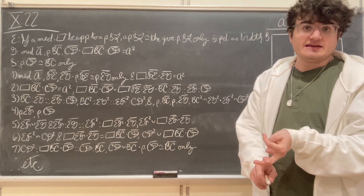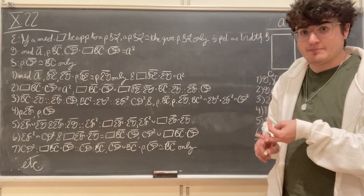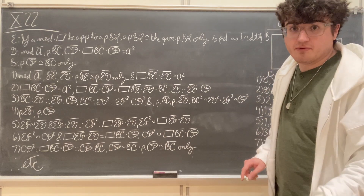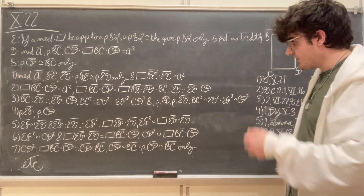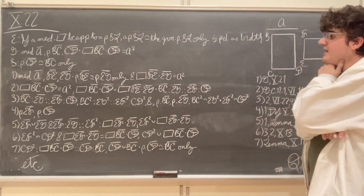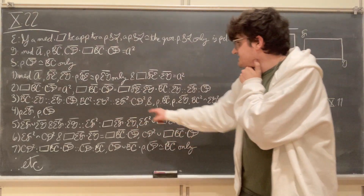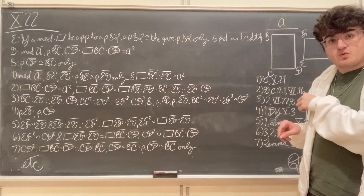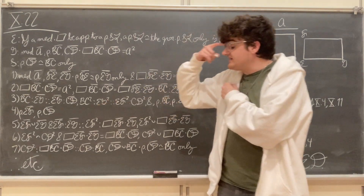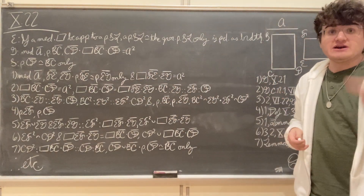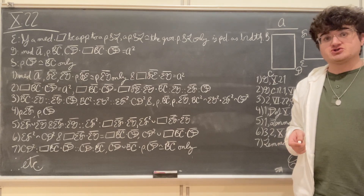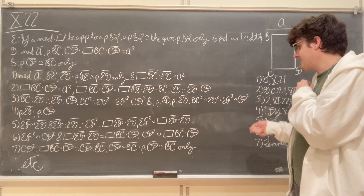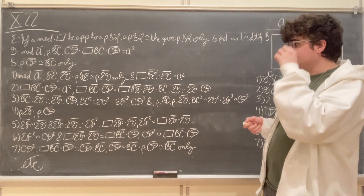Now remember that BC and EG are both rational straight lines. BC was given as rational, and EG was set out as rational in our first step. We know that rational straight lines have commensurable squares by Definition 10.3. So because BC and EG are both rational straight lines, and BC squared is to EG squared as EF squared is to CD squared, BC squared is commensurable with EG squared. And by virtue of this proportion, by Proposition 10.11 — which tells us that commensurability transfers across proportion — because BC squared is commensurable with EG squared, it follows that EF squared is commensurable with CD squared.